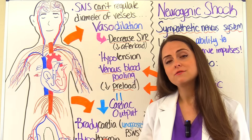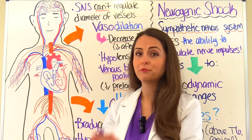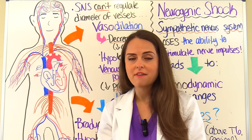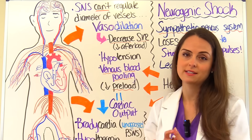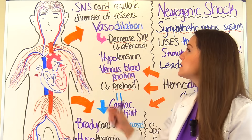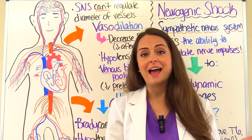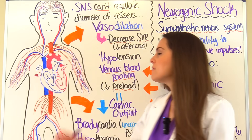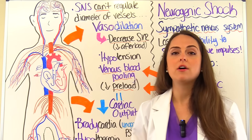With these three types of shock, we have this major vasodilation occurring, but it's occurring for different reasons. With anaphylactic, it's due to an allergen; with septic, it was some type of infection; and with neurogenic, it's a nervous system issue — specifically our sympathetic nervous system. The sympathetic nervous system has lost the ability to regulate the diameter of our vessels, so they're just relaxed, leading to vasodilation. Distributive forms of shock affect how those small vessels work.